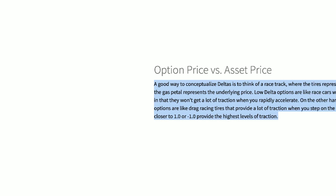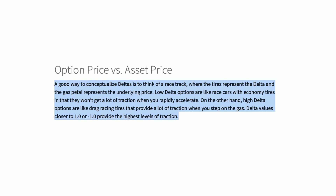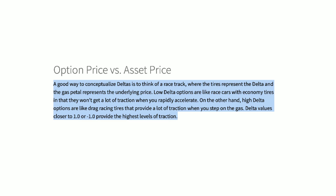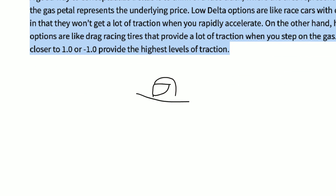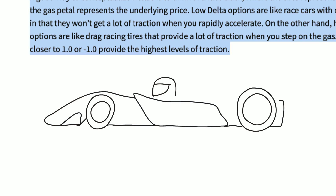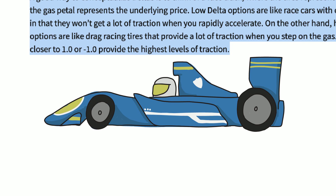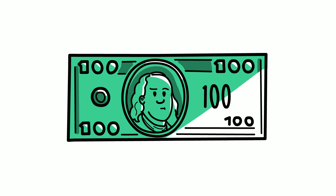Investopedia.com has one of the best explanations of Delta on the internet. They compare Delta to a racetrack where the tires represent the Delta and the gas pedal represents the underlying price. Low Delta options are like race cars with bad tires that won't get a lot of traction when you rapidly accelerate. On the other hand, high Delta options are like drag racing tires that provide a lot of traction when you step on the gas. Delta values closer to 1 or negative 1 provide the highest level of traction and move the most when the underlying asset moves, but they are also the most expensive.